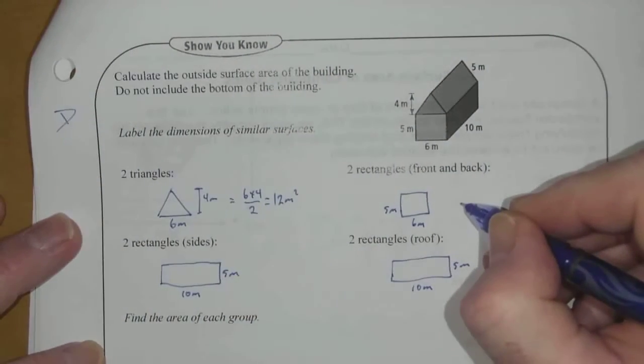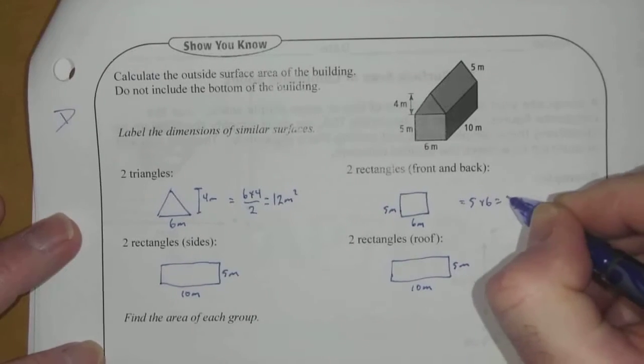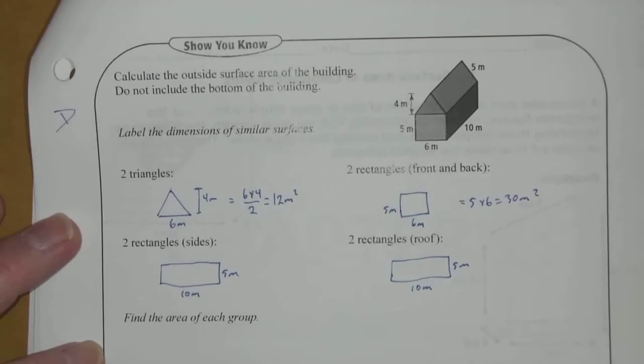This one, it's equal to 5 times 6, or 30 meters squared.